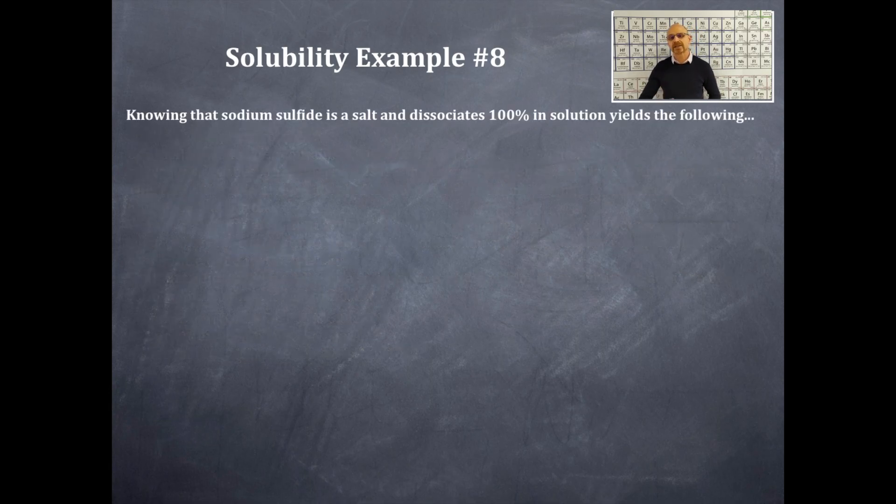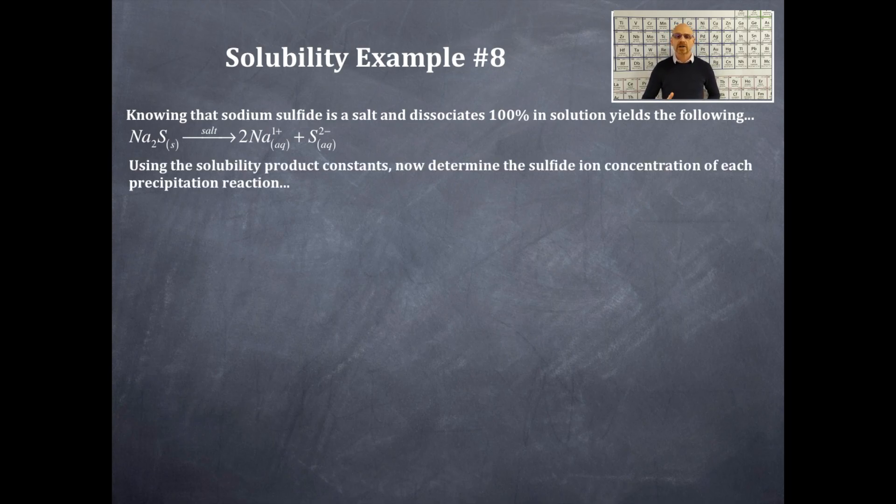Knowing that sodium sulfide is a salt and dissociates 100% in solution, this yields the following. So sodium sulfide, sodium is a group 1, sulfide is underneath oxygen, so sodium has a 1+ charge, and sulfide has a 2- charge. Therefore, that's why the formula Na2S is a salt which dissociates 100% and I get two sodium ions and one sulfide ion for every one sodium sulfide molecule. So, using the solubility product constants, now we're going to determine the sulfide ion concentration for each precipitation reaction.